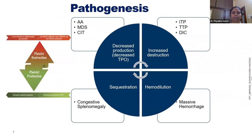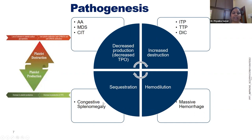Regarding pathogenesis: decreased production — thrombopoietin, the stimulant for platelet production, is decreased in aplastic anemia, MDS, and chemotherapy-induced thrombocytopenia. Increased destruction occurs in antibody-mediated destruction or in consumption disorders like ITP, TTP, and DIC. Sequestration occurs in congestive splenomegaly — the spleen is a site where a lot of pooling of platelets occurs, and when the spleen is enlarged, there is significant sequestration.